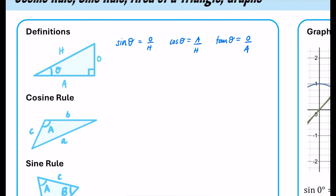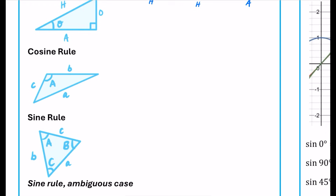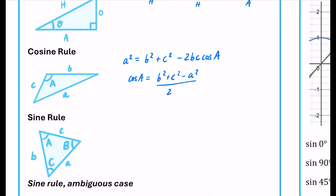That's probably the way most people remember this. Now for the cosine rule, it kind of looks like Pythagoras when you start off. We have a squared equals b squared plus c squared, with this extra bit that adjusts it: minus 2bc cos A. Some people know the rearranged version where cos A is the subject — that is cos A equals b squared plus c squared minus a squared, all over 2bc.